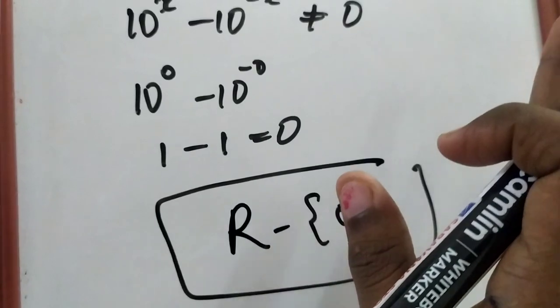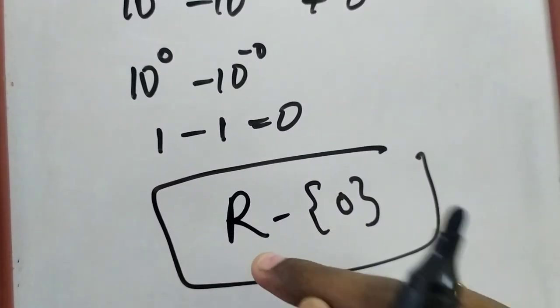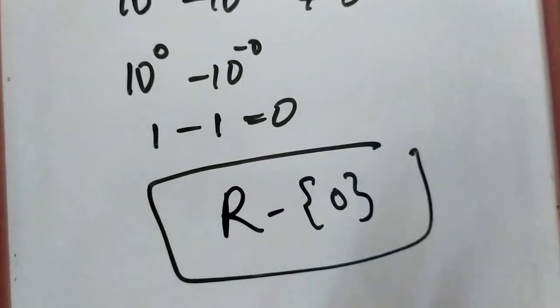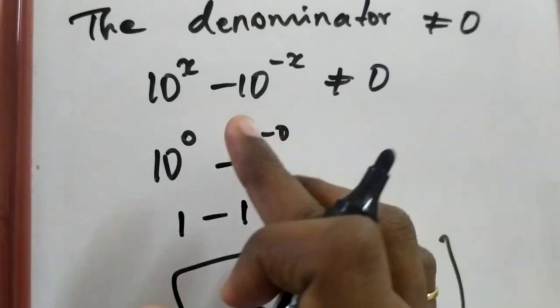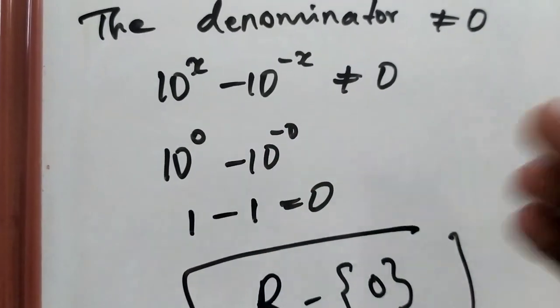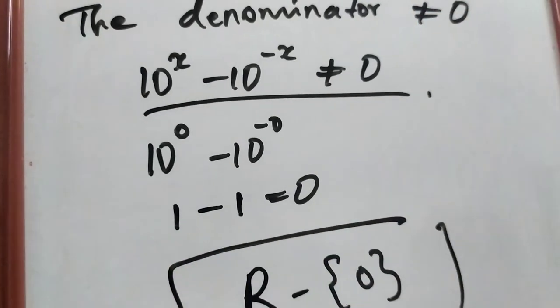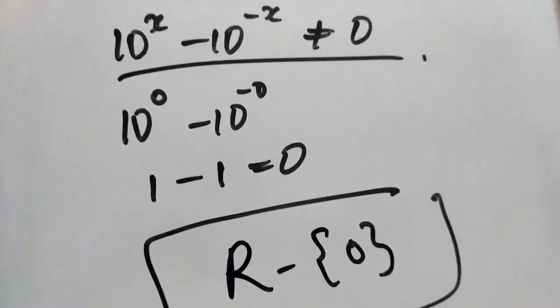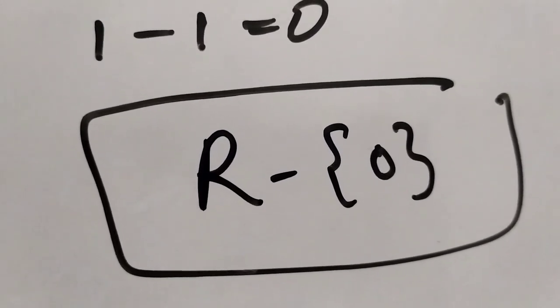You have to separate that 0 from the real numbers. You can take any real numbers except 0. When you substitute 0, you are getting the whole denominator value as 0. But the condition is the denominator should not be equal to 0. Therefore, it is like real numbers minus 0. Thank you for watching.